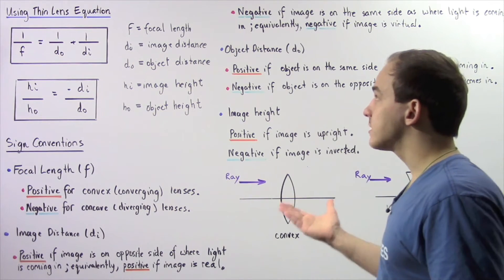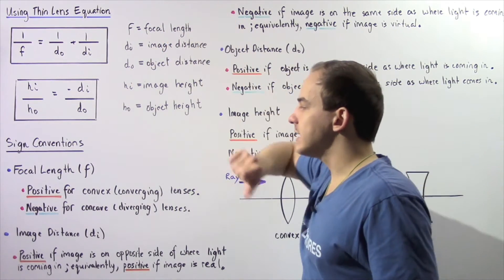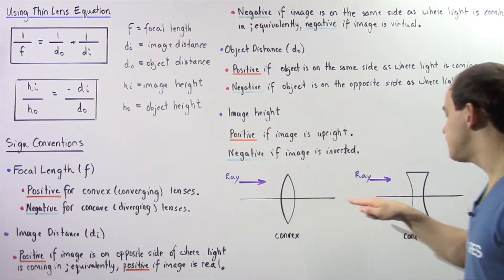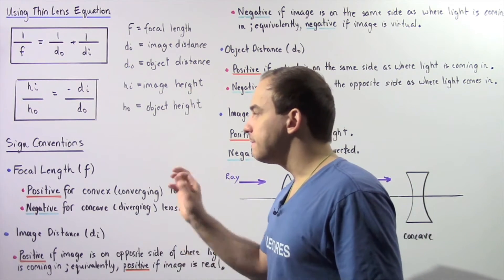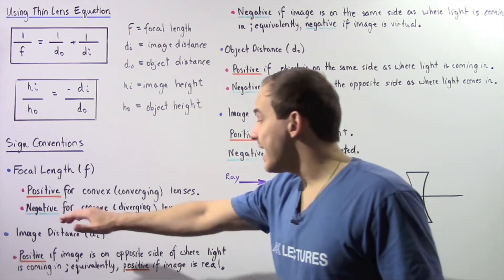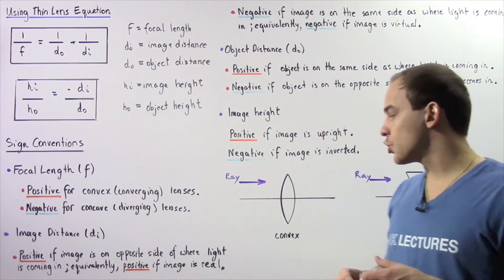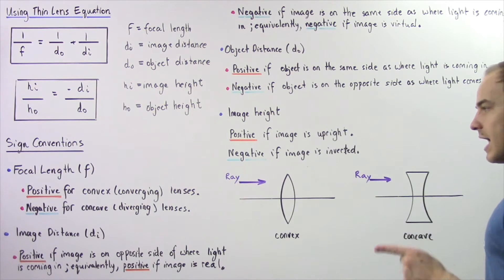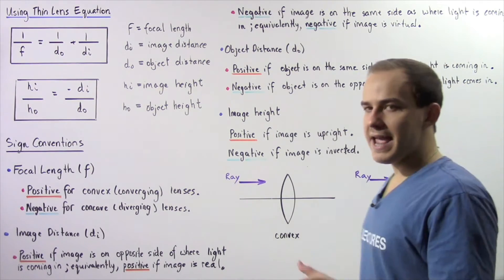Let's begin our discussion of sign conventions by looking at the focal length. The focal length f is the distance from the center of our lens to the focal point. We define the focal length to be positive for convex or converging lenses and negative for concave or diverging lenses. So if we're dealing with a convex lens, our focal length is positive; if we're dealing with a concave lens, our focal length is negative.